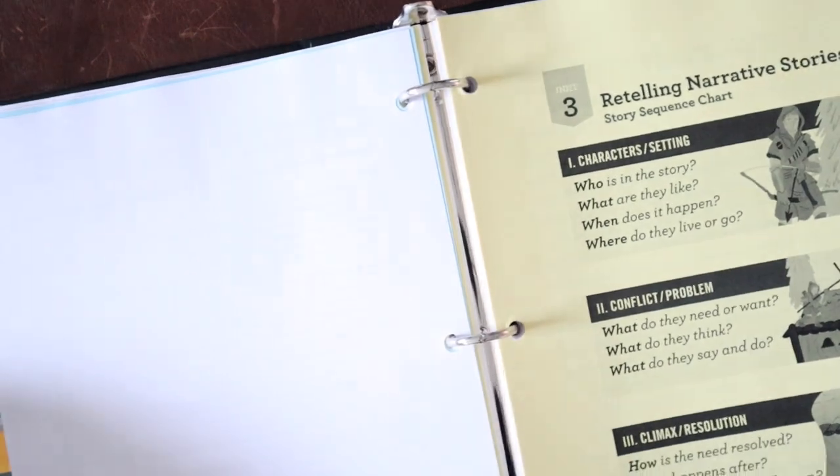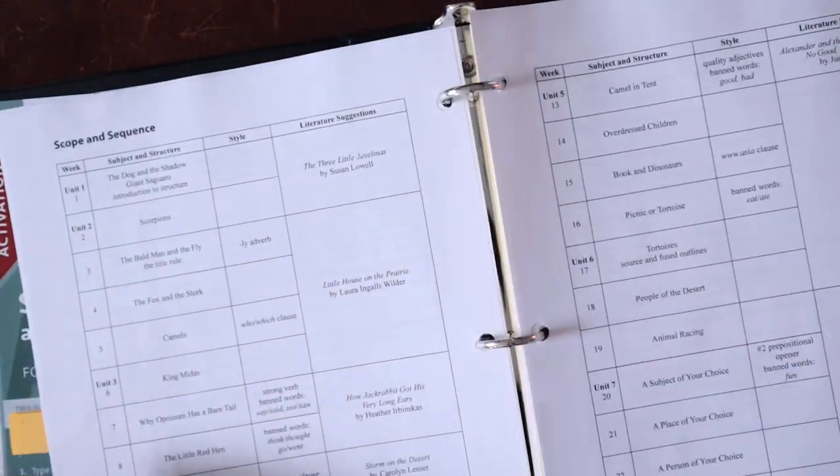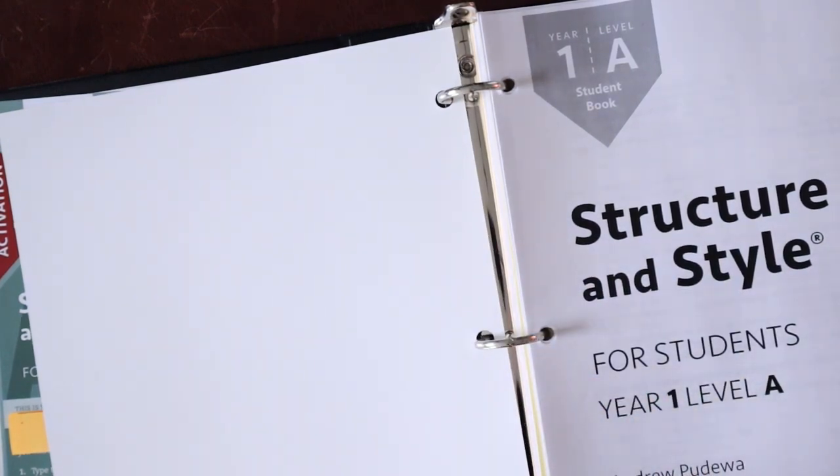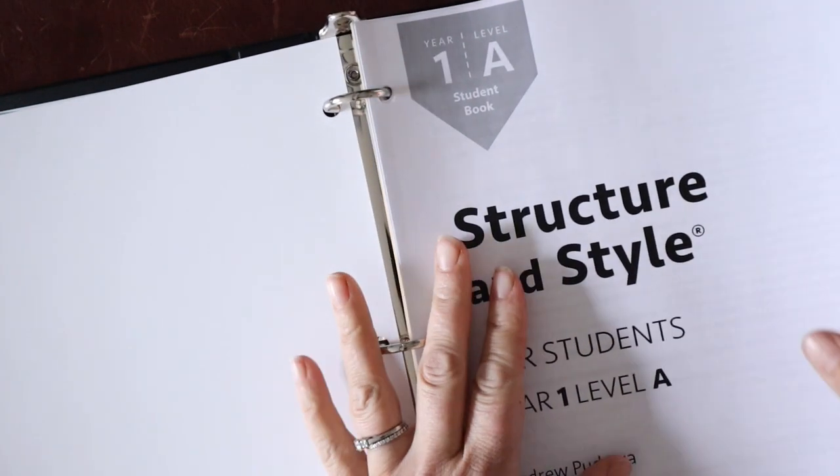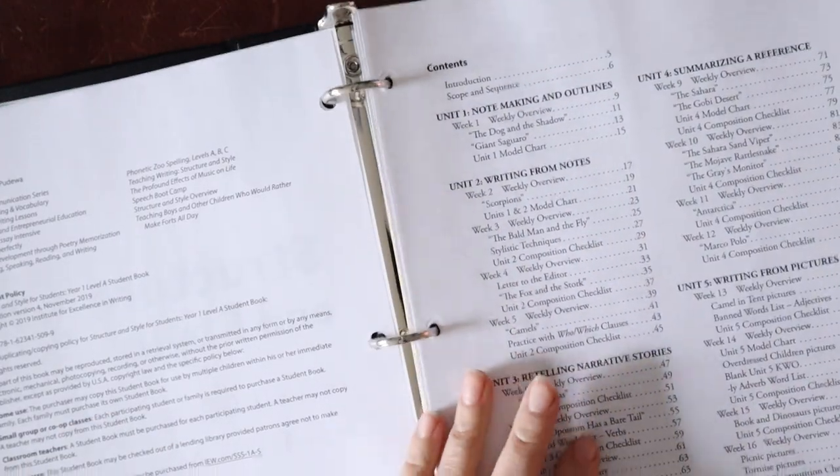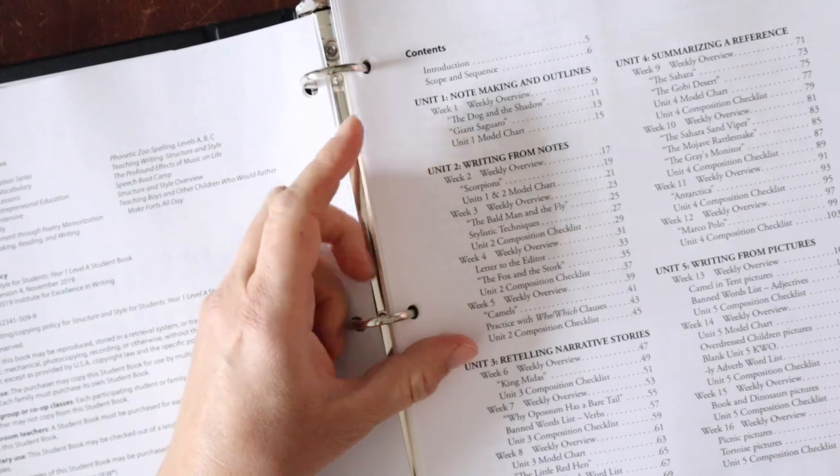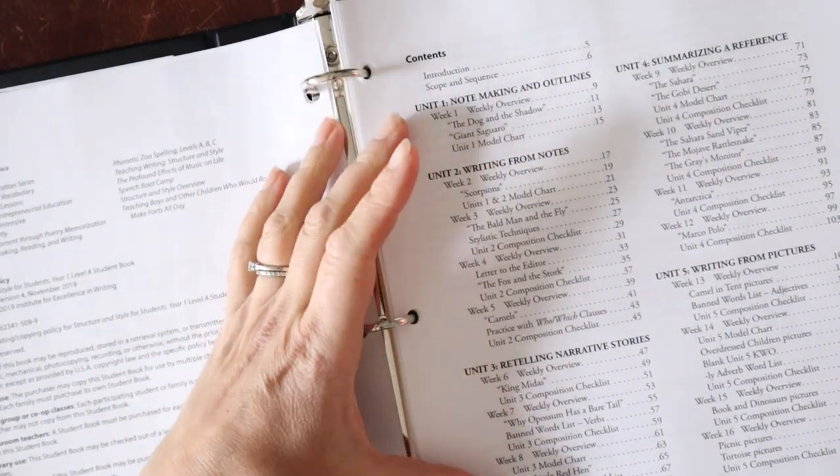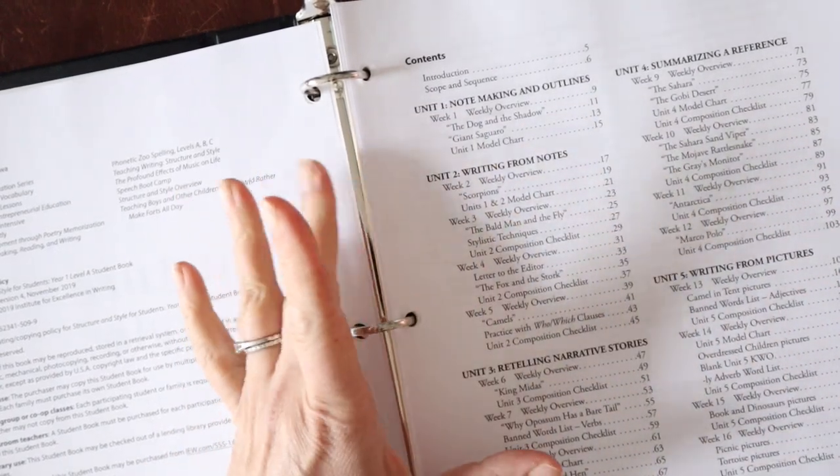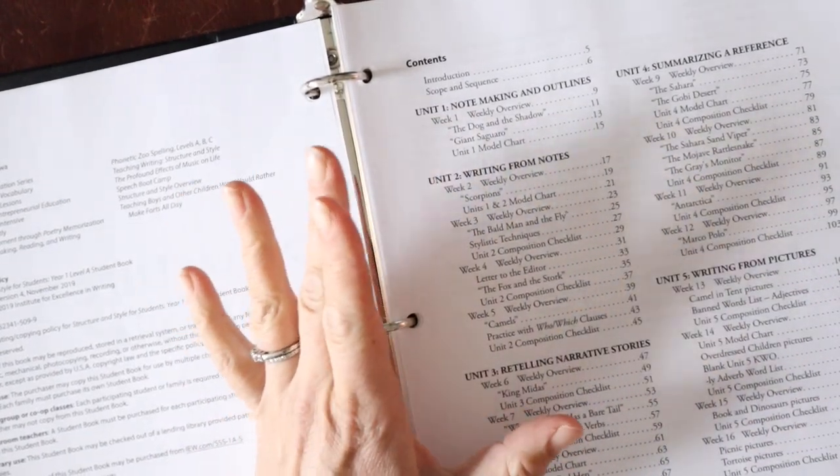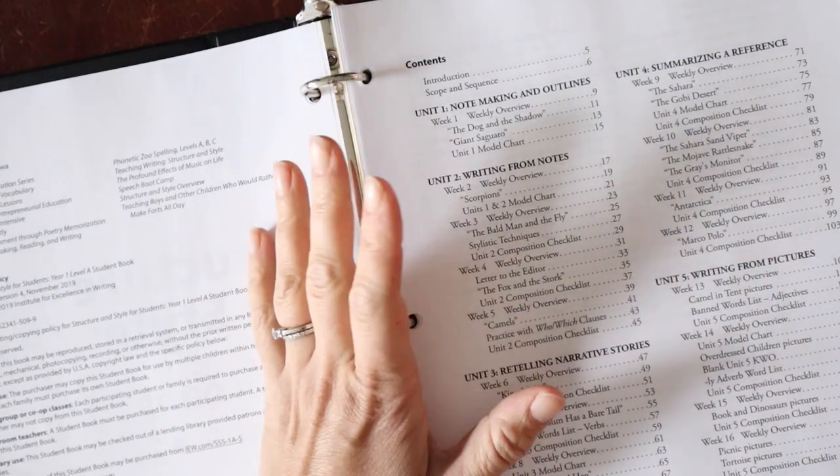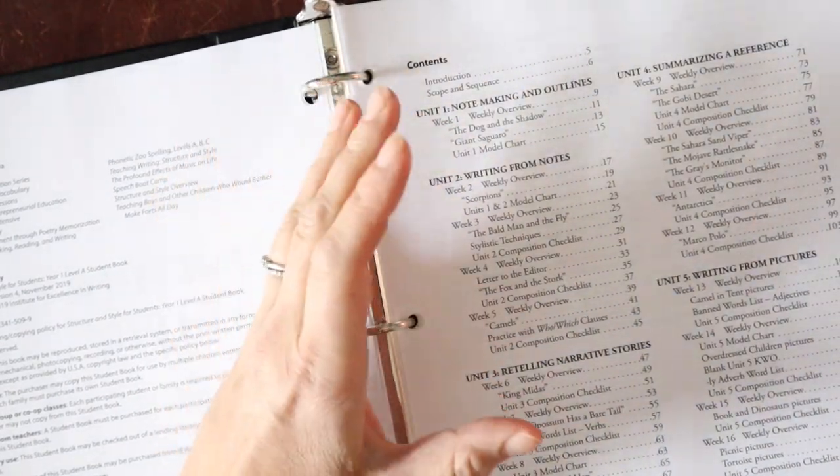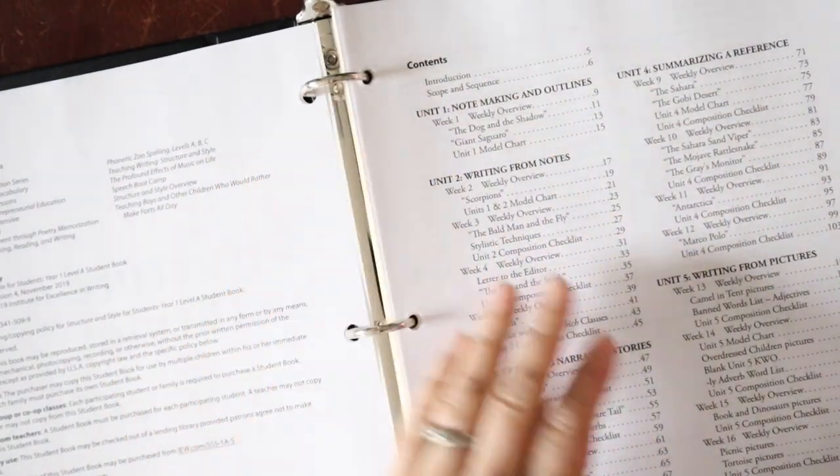Now, this program moves at a fairly fast pace. If you are doing this with a student who is coming from another writing program and a little bit older, fourth or fifth grade, you might be fine with the pacing. If you are starting this with a student who has never done a formal writing program or on the younger side, third grade, then you might end up needing to stretch this out a little bit more. That's okay. This is a guide for you. You can change the speed. Just know that if you're not getting everything in, don't try to cram it or skip over things, just slow it down a little bit.